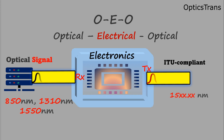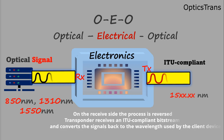To summarize: a transponder receives the input optical signal, converts that signal into the electrical domain, and retransmits it into the optical domain with an ITU-T compliant wavelength. On the receive side, the process is reversed — the transponder receives an ITU-T compliant bit stream and converts the signals back to the wavelength used by the client device.